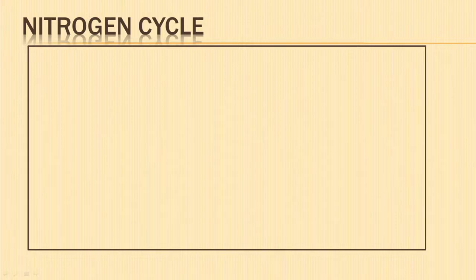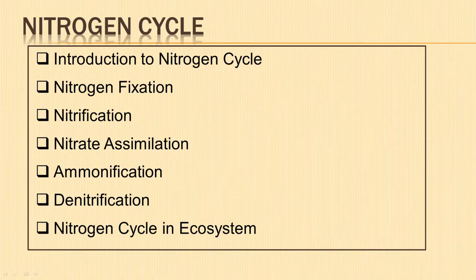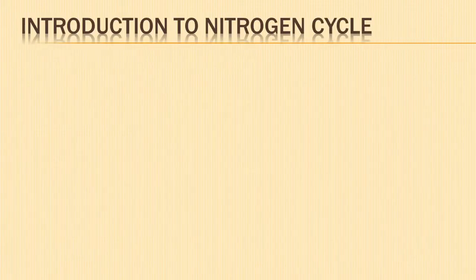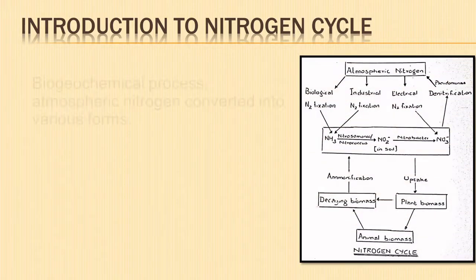In today's video we shall learn in detail about the nitrogen cycle in our ecosystem. By the end of this video you'll have a clear understanding about the different processes like nitrogen fixation, nitrification, nitrate assimilation, ammonification, and denitrification that occur in cycling atmospheric nitrogen. Let us start with the introduction to the nitrogen cycle.